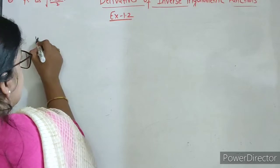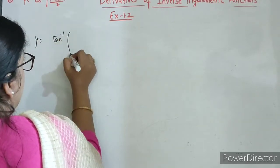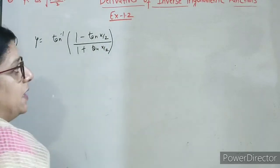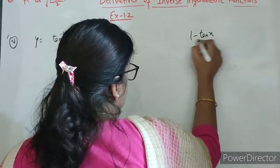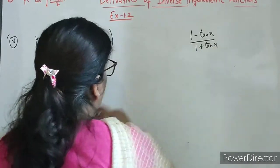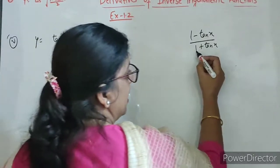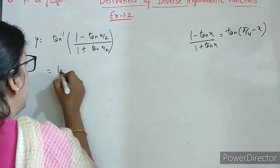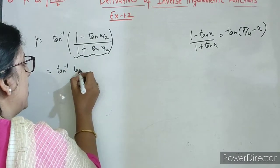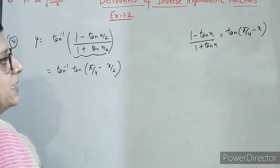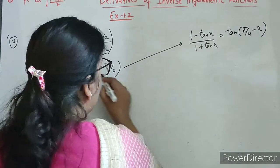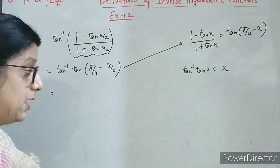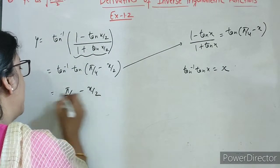Now children, 5th part is y equals to tan inverse of 1 minus tan x by 2 upon 1 plus tan x by 2. Formulae yaad hai trigonometry ke to koi problem nahi aegi. Now in this question, which formula we can use? 1 minus tan x upon 1 plus tan x — the formula is tan of pi by 4 minus x. So in place of this bracket, we can write tan of pi by 4 minus x by 2 using this formula.